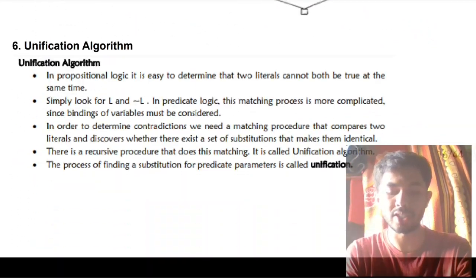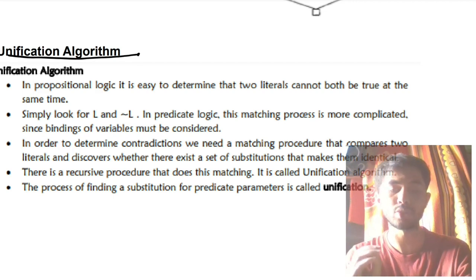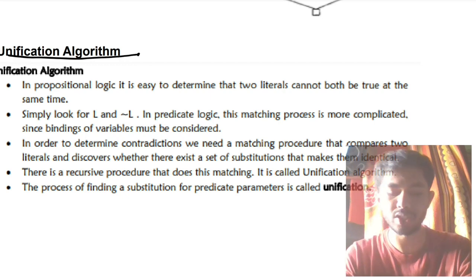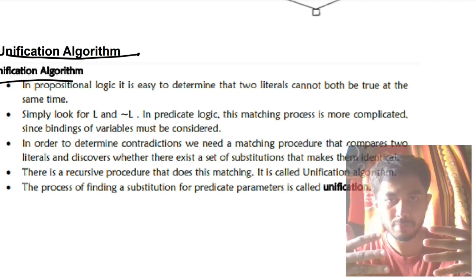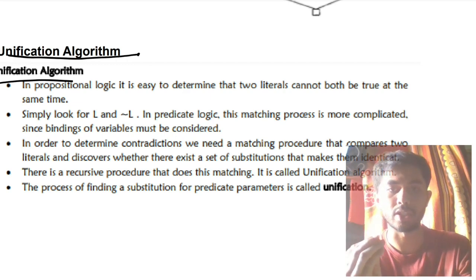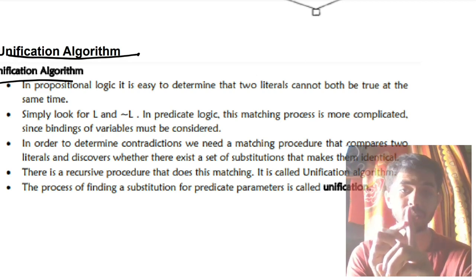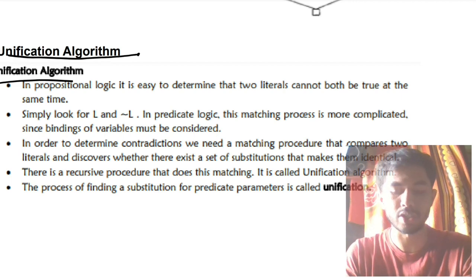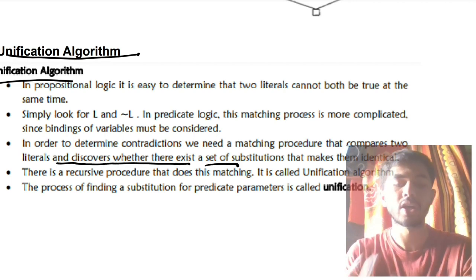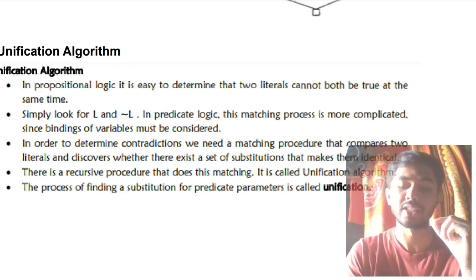The last question of Module 2 is the unification algorithm. You have to write what it is, why it is used, and give an example. In propositional logic, mixing a true and a false statement nullifies them — it's simple. But in predicate logic it's more complex because statements depend on many other factors. Those dependencies must be discovered and nullified using the unification algorithm.